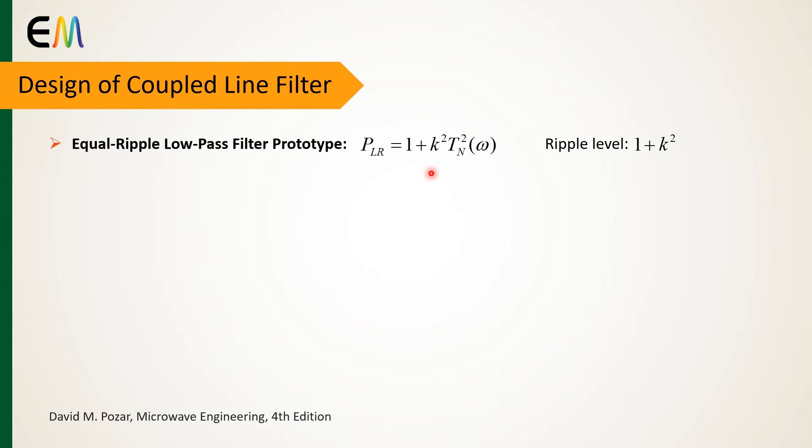The power loss ratio of this prototype is expressed as this relation. In this equation, 1 plus k to the power of 2 determines the ripple level of the passband, and Tn is the Chebyshev polynomial as a function of omega.